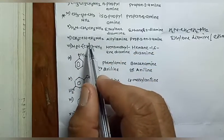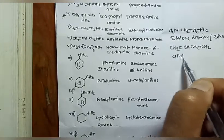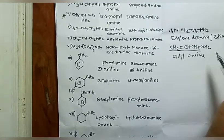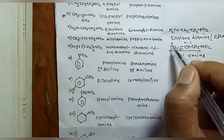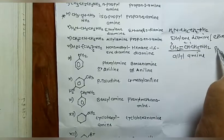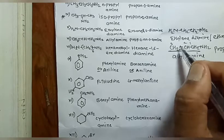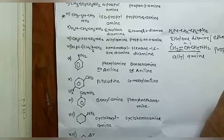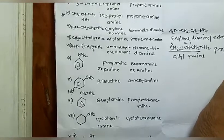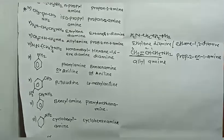For an unsaturated amine like CH₂=CHCH₂NH₂, the common name is 'allylamine' (since it contains an allyl group). In IUPAC nomenclature, the parent alkene is propene. The double bond is between C2 and C3, and the NH₂ group is on C1. The IUPAC name is 'prop-2-en-1-amine'.